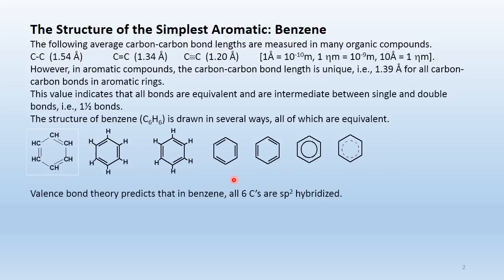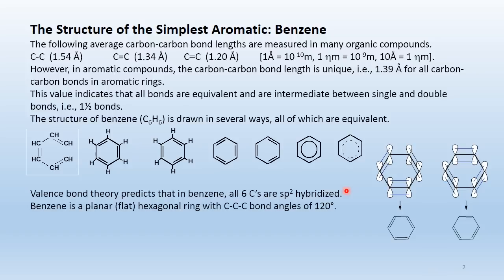Valence bond theory predicts that in benzene all six carbons are sp2 hybridized. Consider a single carbon: it has a sigma bond here, sigma bond here, and a sigma plus pi bond here. Recall that pi bonds are made from unhybridized orbitals. Counting sigma bonds only, there are three, so the carbon is sp2 hybridized. Pi bonds occupy the same space as sigma bonds, so this carbon has three electron clouds and needs three hybridized orbitals — sp2.